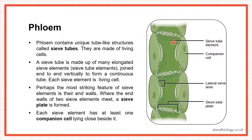In the sieve tube, we have sieve plates with pores in them. This is the difference between xylem and phloem — in phloem, the end walls are still there but they have pores in them. Each sieve tube element has at least one companion cell next to it. Each sieve tube is made up of sieve elements, and every sieve element has a companion cell lined next to it. We also have lateral sieve areas connecting the companion cell to the sieve tube element.